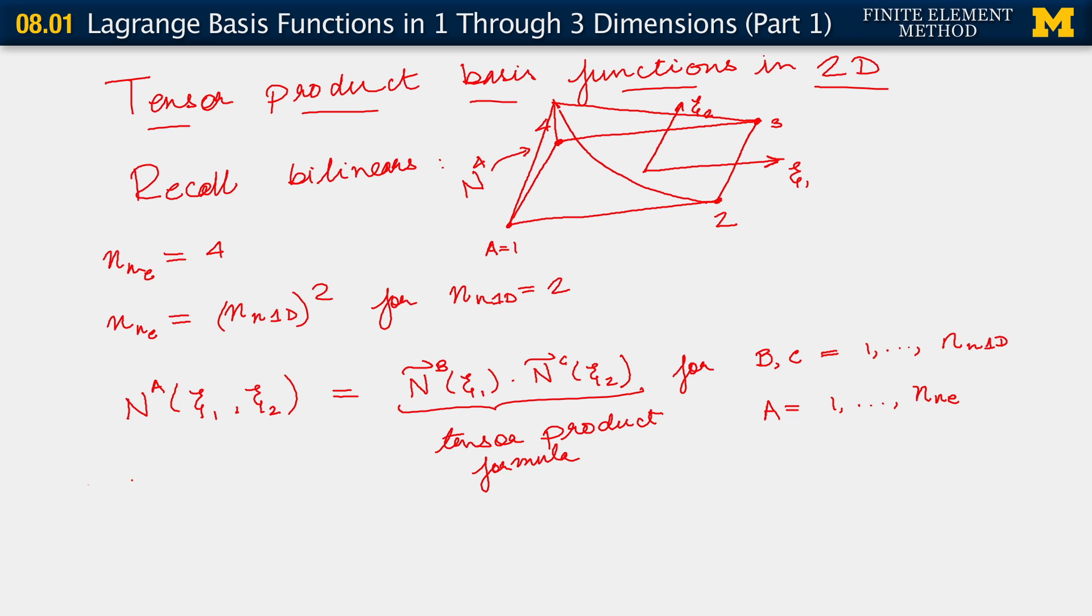With this sort of view, what we observe now is that N1 of C1, C2 is the product of N1 tilde of C1, it's a product of N1 tilde in the C1 direction and N1 tilde again in the C2 direction. And that becomes clear by just looking at it.